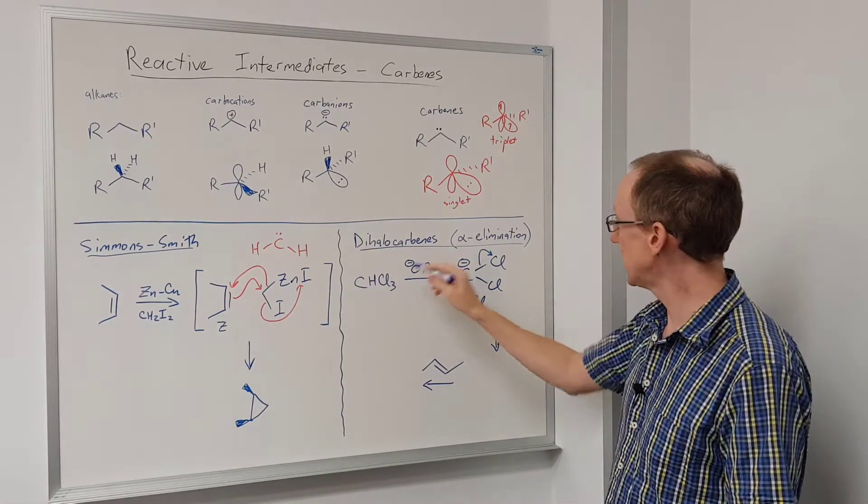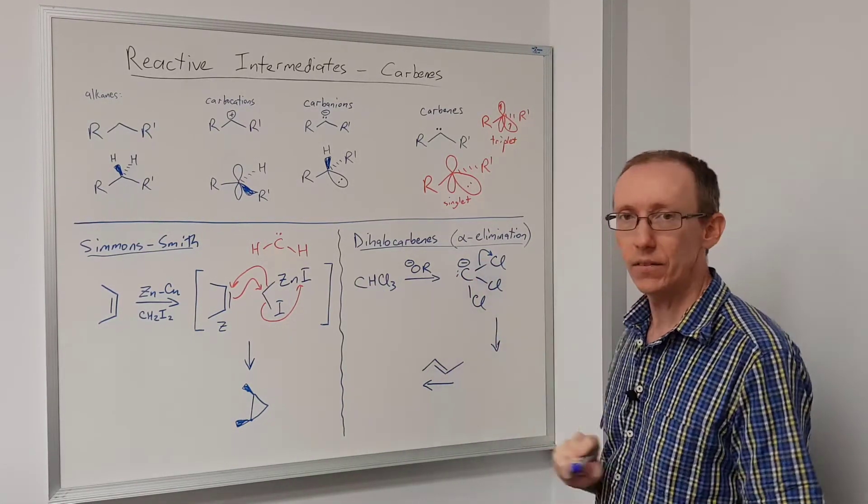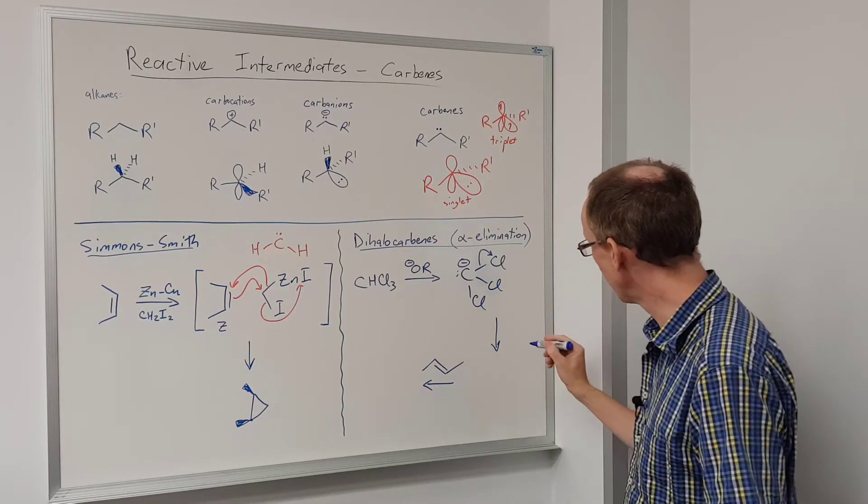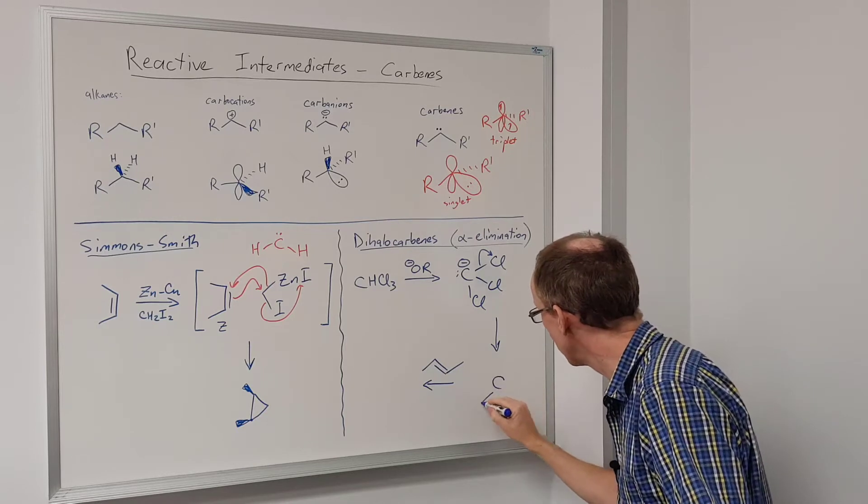This is the alpha elimination. Both the proton and the leaving group are being lost from the same carbon atom. So we lose chloride, and we're going to end up with this species here.